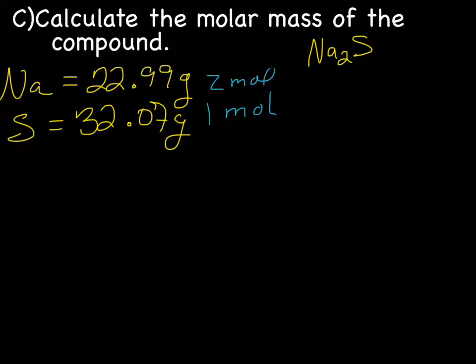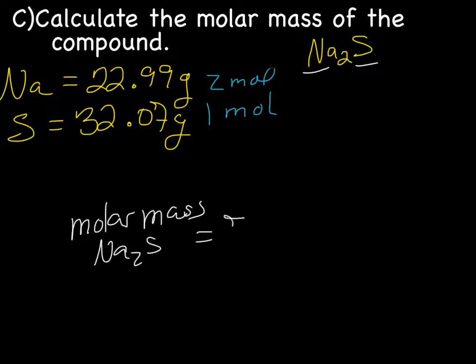Now we need to calculate the molar mass of the compound. The molar mass of the compound is like we've been doing. You add up the masses of two Na's and one S. So when I put that in my calculator, I came up with molar mass of Na2S, I got 78.05 grams, and there's four sig figs, so I have four sig figs.